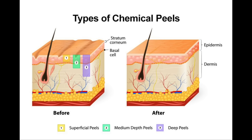A TCA peel is a type of chemical peel. Chemical peels are procedures performed by dermatologists, estheticians, and plastic surgeons to exfoliate the skin and treat a wide variety of skin lesions. Chemical peels fall into three categories: superficial, medium, and deep. Superficial chemical peels exfoliate the very top layer of the skin, whereas medium and deep peels reach down to the deeper layers of the skin — the dermis — for deeper exfoliation.